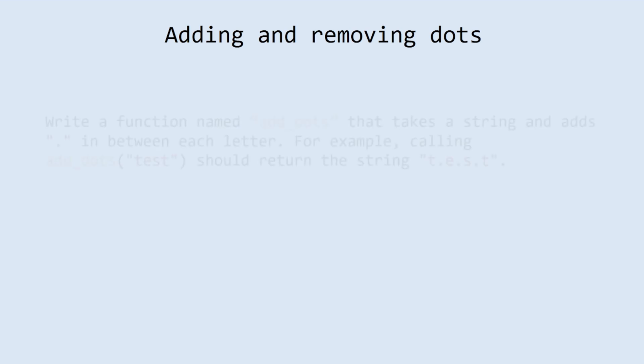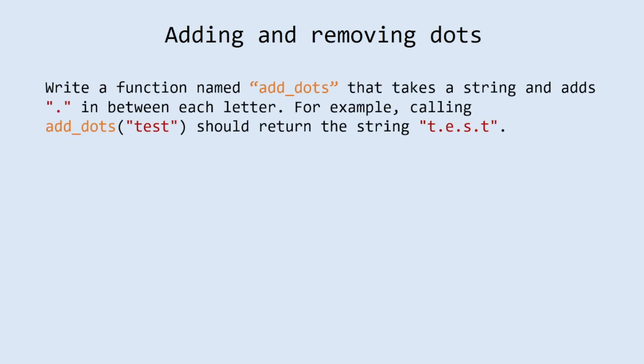Let's solve the first one, adding and removing dots. Write a function named addDots that takes a string and adds a dot in between each letter. For example, calling addDots with 'test' should return the string 't.e.s.t'.